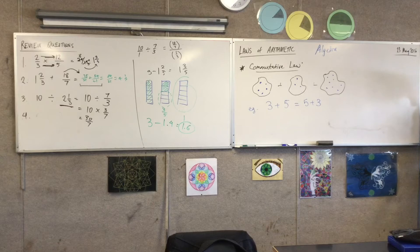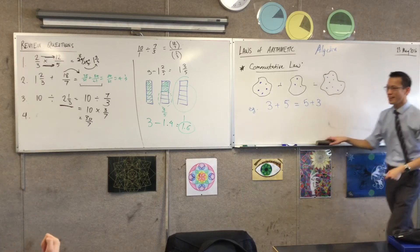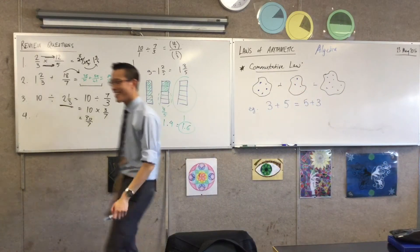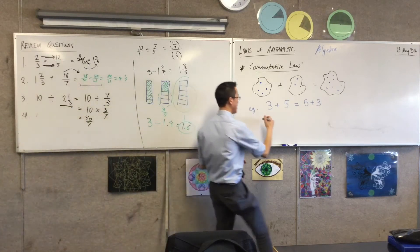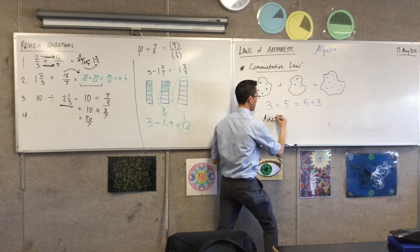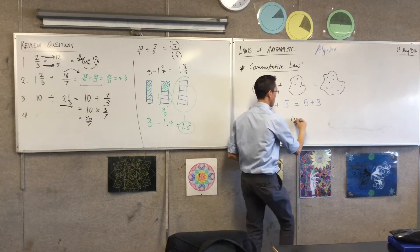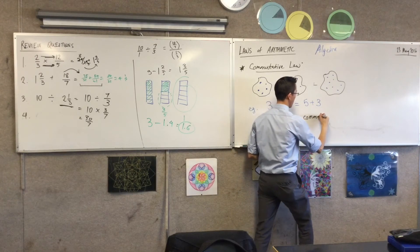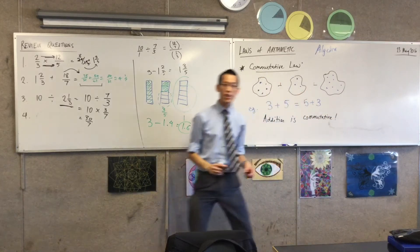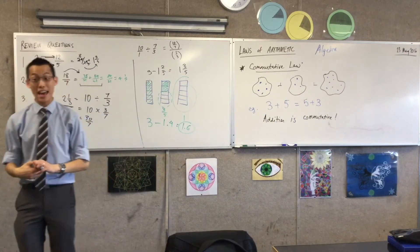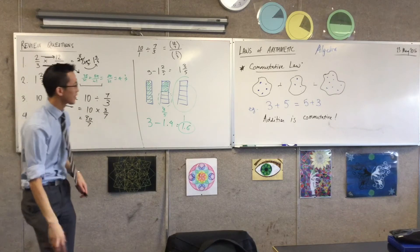This is about addition. Addition is commutative. You can add the numbers in whatever order you like, and you'll get the same result.